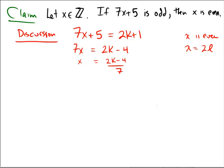So that's inconvenient, isn't it? 2k minus 4 over 7. Now we have division, so I can't even guarantee that I'm still in integers.